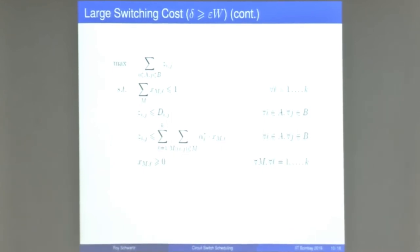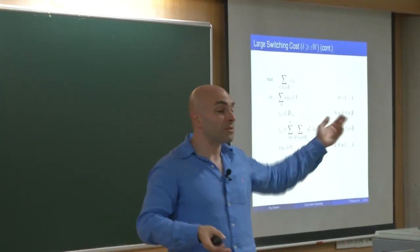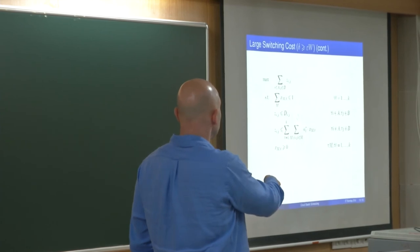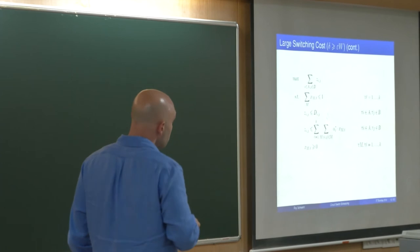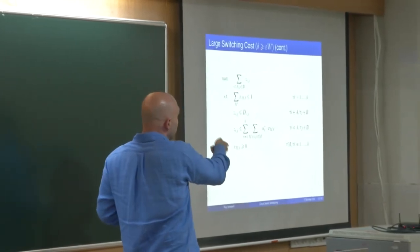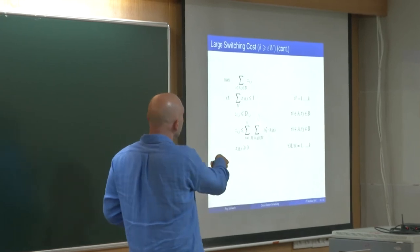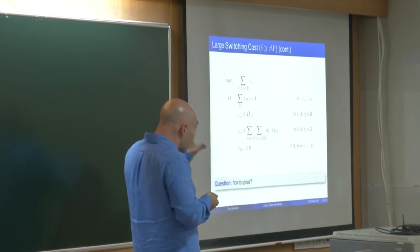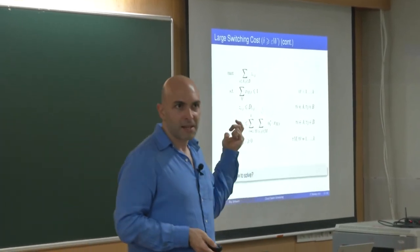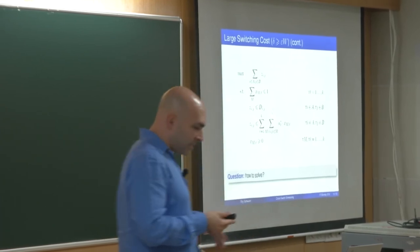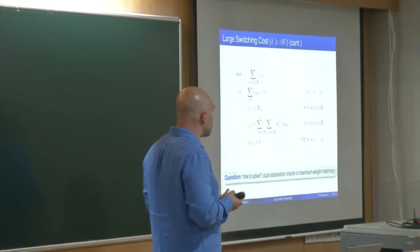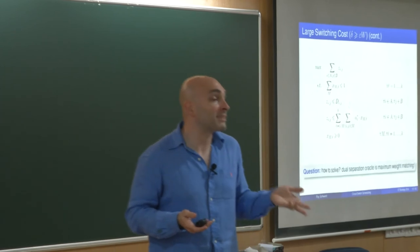This LP is simple: maximize the total contribution of all edges. There's an exponential number of variables, but we solve it by writing the dual and observing that the separation oracle is maximum weight matching, so it can be solved using the ellipsoid algorithm. The durations are known constants, not variables, which is why this LP formulation is valid.